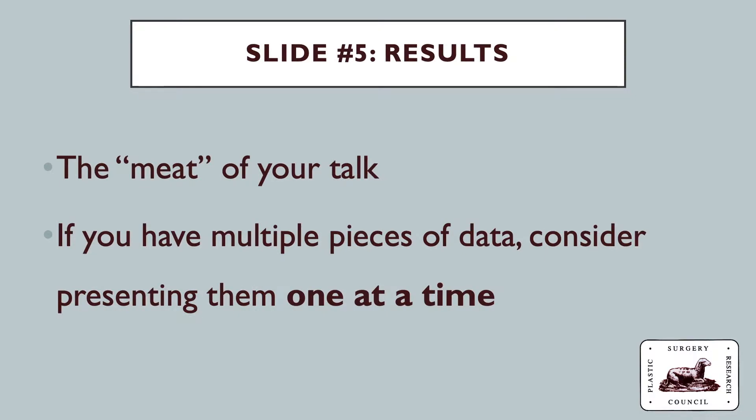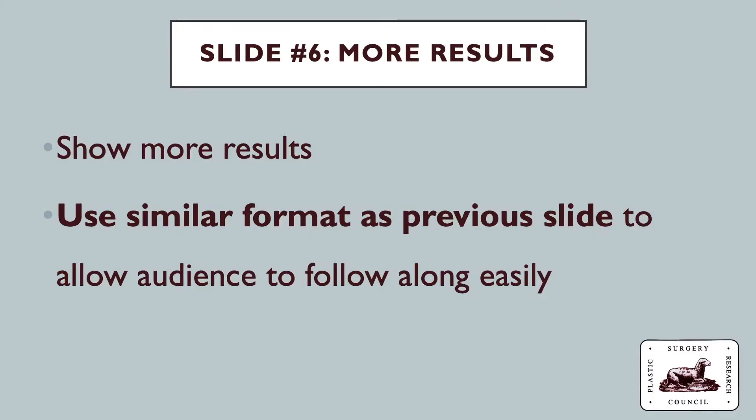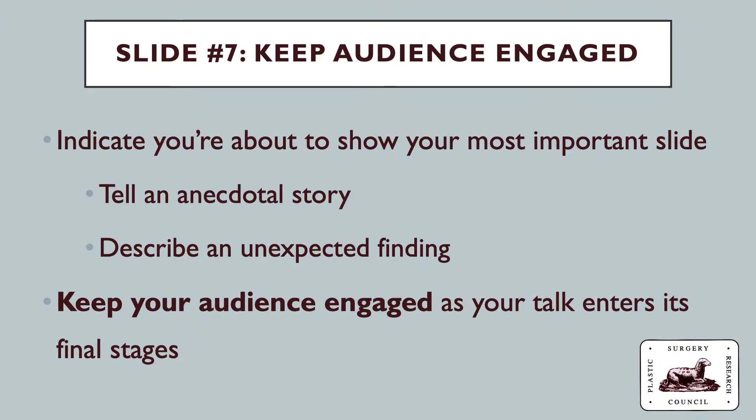Slide number five: it's time to get into the meat of your talk. Show some results, and if you have multiple pieces of data, reveal them piece by piece — this gives the audience a chance to focus on each element individually. Slide number six: show more results, and if possible use a similar format to the previous slide so the audience becomes familiar with your layout and can follow along more easily. Slide number seven: at this point, you may want to indicate you're about to show your most important slide, or tell an anecdotal story about how the data was generated or an unexpected finding. Telling a story will keep your audience engaged as your talk enters its final stages.